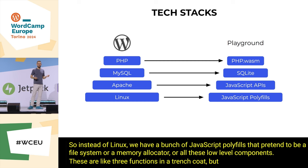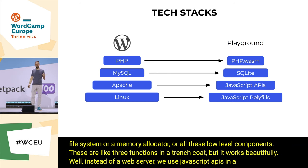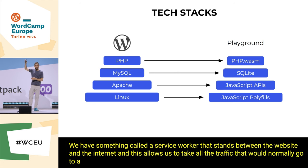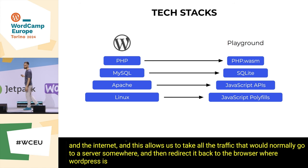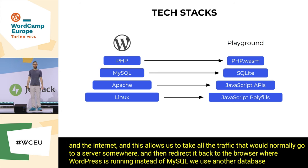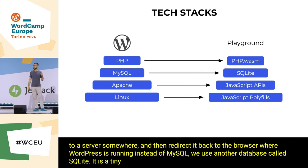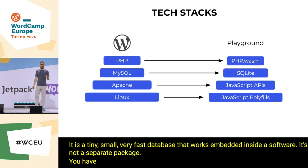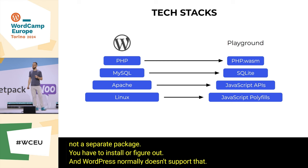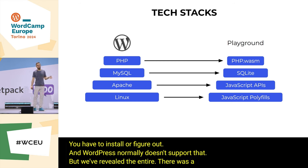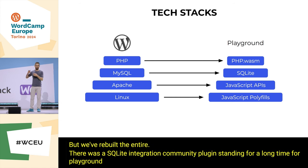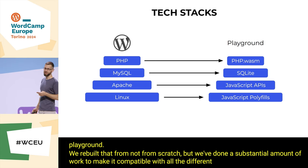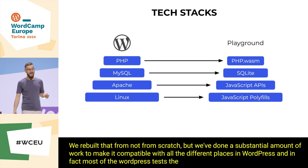We ship that entire tech stack in various forms in the browser. Instead of Linux, we have JavaScript polyfills that pretend to be a file system, memory allocator, and other low-level components — like three functions in a trench coat, but it works beautifully. Instead of a web server, we use browser JavaScript APIs — specifically a service worker that stands between the website and the internet, redirecting traffic back to the browser where WordPress is running. Instead of MySQL, we use SQLite — a tiny, fast, embedded database. WordPress normally doesn't support SQLite, but we've done substantial work to make it compatible, and most WordPress automated tests now pass on SQLite.